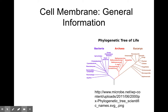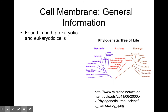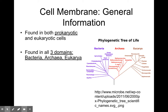Way back at the beginning of the year, we talked about the three domains of life: bacteria, archaea, and eukarya. We are in the eukarya domain because we have eukaryotic cells, whereas these two domains have prokaryotic cells. Cell membranes are in every single solitary type of cell — they have a membrane that protects the cell. It's found in both prokaryotic and eukaryotic cells, in all three domains.